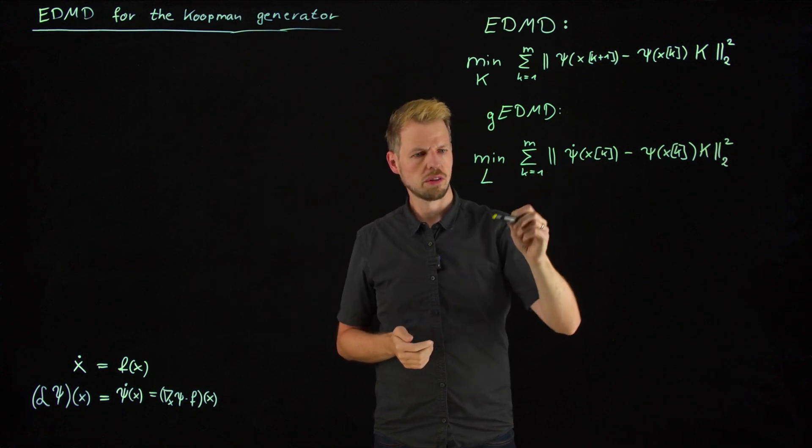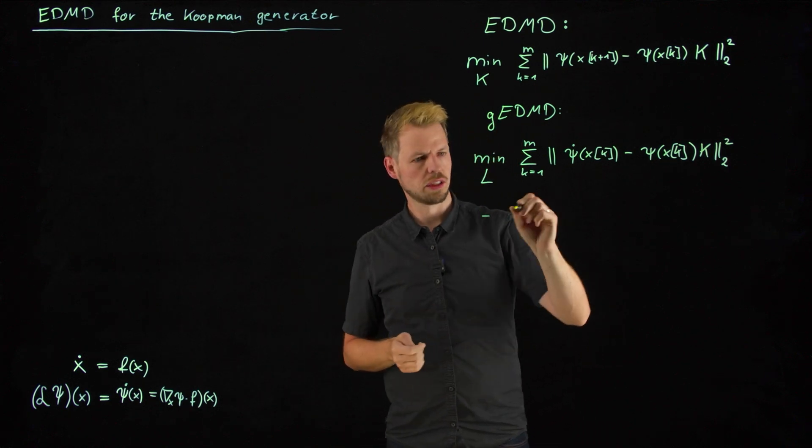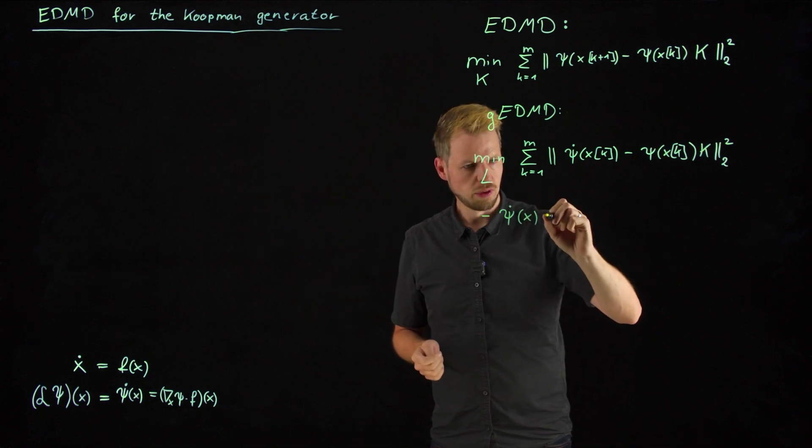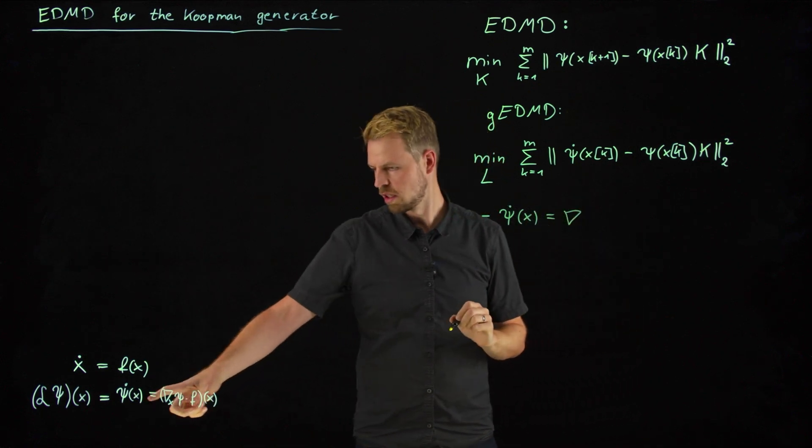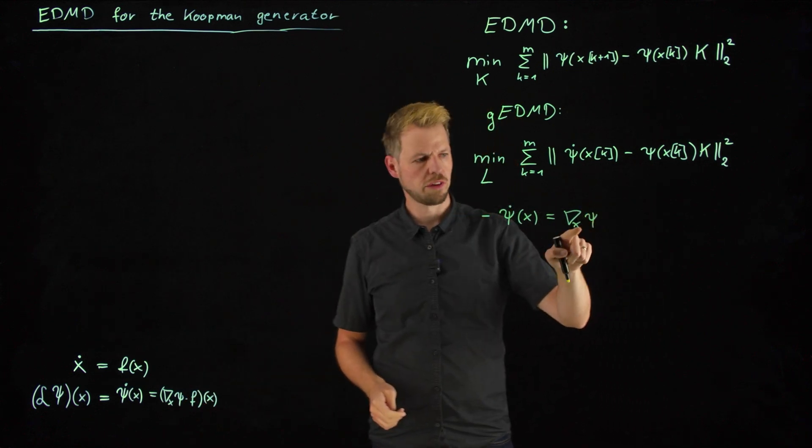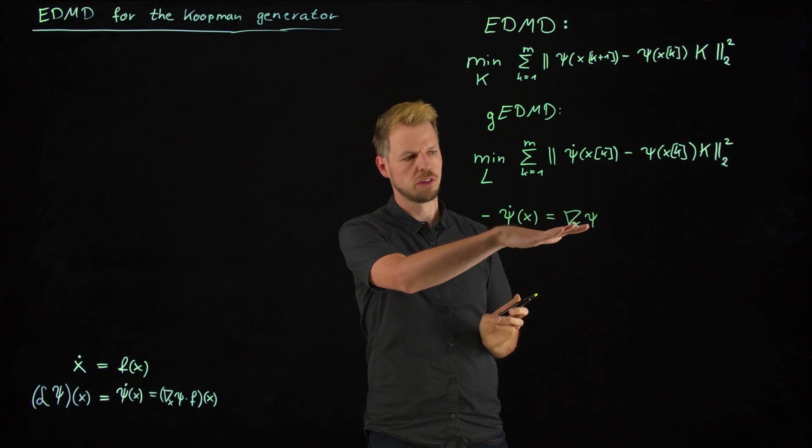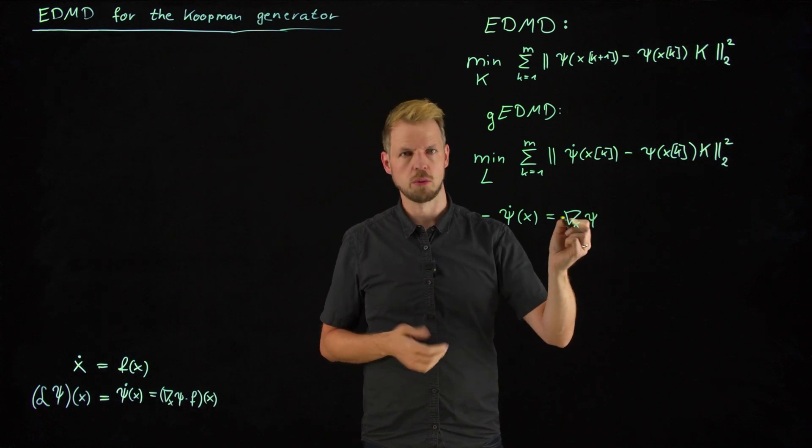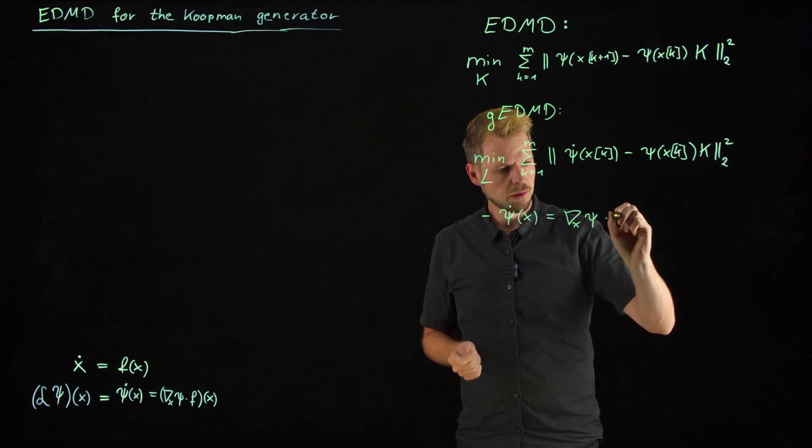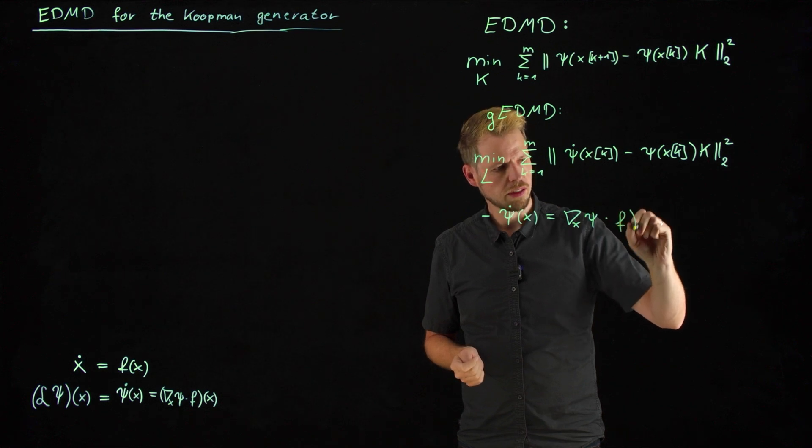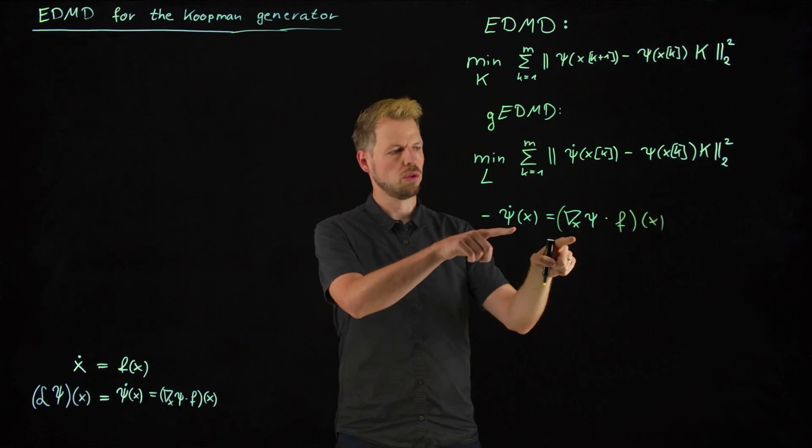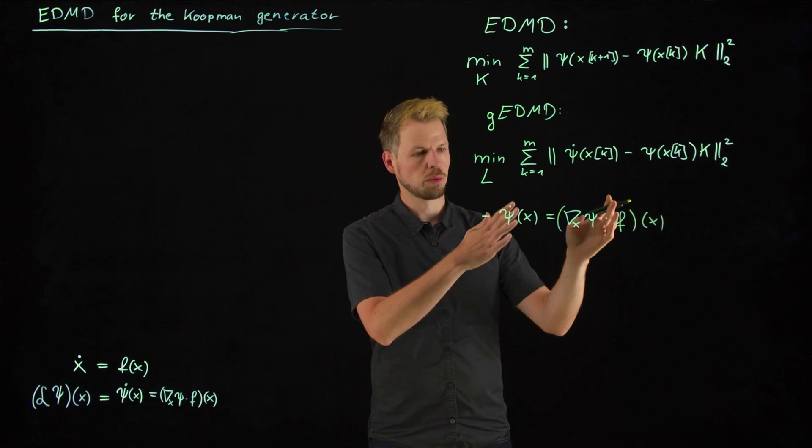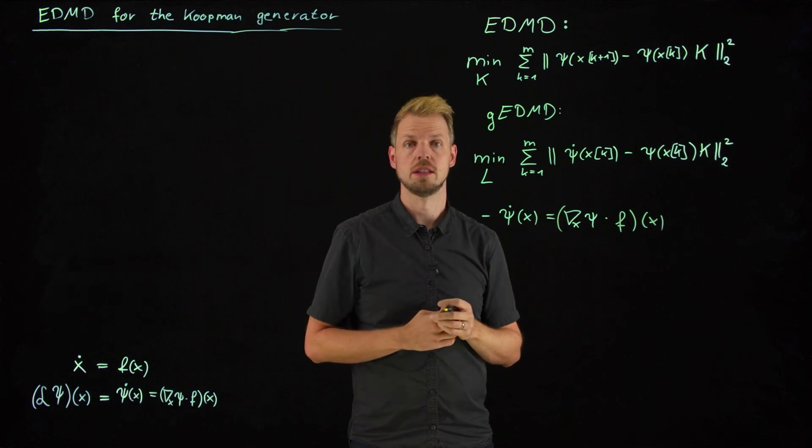So there's two ways to do this. One would be to consider the analytical way, to say that psi dot of x is really what we have seen as our equation here, taking the derivative of our dictionary functions. So let's say we have taken monomials, then the derivative of these entries is very easy. Same for radial basis functions, Fourier modes, basically any dictionary that we can define times our dynamics. And this is the more tricky part. So if we want to use this expression, we actually have to know the right hand side of our system. In many cases, we do. And then we can do this. Sometimes we want to study systems that we don't know at all.